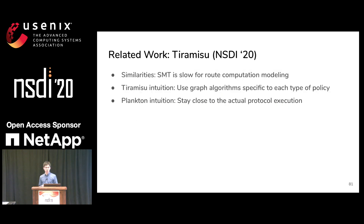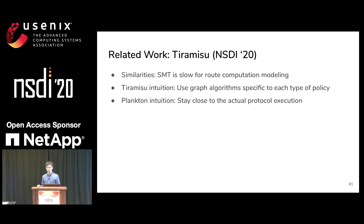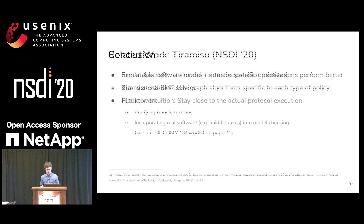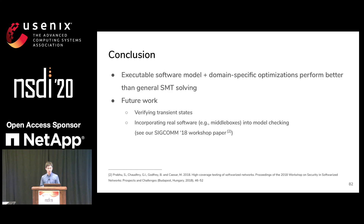There is related work called Tiramisu, presented two days ago. We share a similar observation — that SMT is slow for route computation modeling — but we choose different approaches. Tiramisu uses graph algorithms specific to each type of policy, whereas Plankton stays close to actual protocol execution and implements an executable software model according to the protocol. Our experiment results show that executable software models together with domain-specific optimizations outperform general SMT solving.